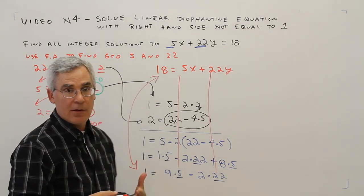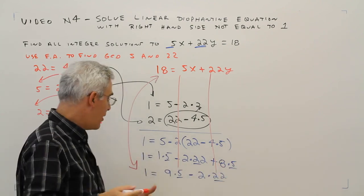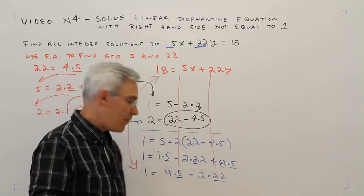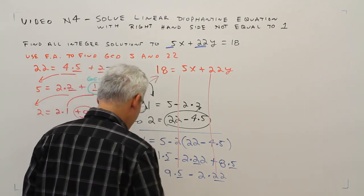So what I'm going to do is simply multiply the left side by 18 and the right side by 18. And then I'm essentially done.